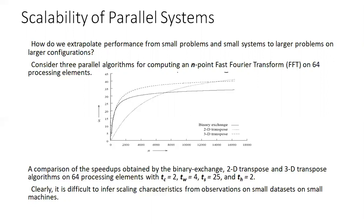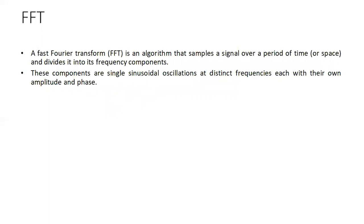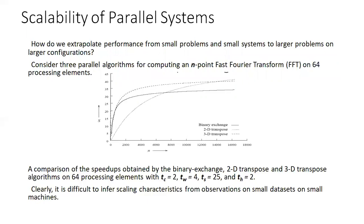Unfortunately, such parallel performance stresses are the norm as opposed to the exception, making performance prediction based on limited observed data very difficult. Fast Fourier Transform (FFT) is an algorithm that samples a signal over a period of time or space and divides it into its frequency components. These components are single sinusoidal oscillations at distinct frequencies, each with their own amplitude and phase. We have taken the example of n-point FFT on 64 processing elements and considered three algorithms: binary exchange, 2D transpose, and 3D transpose.